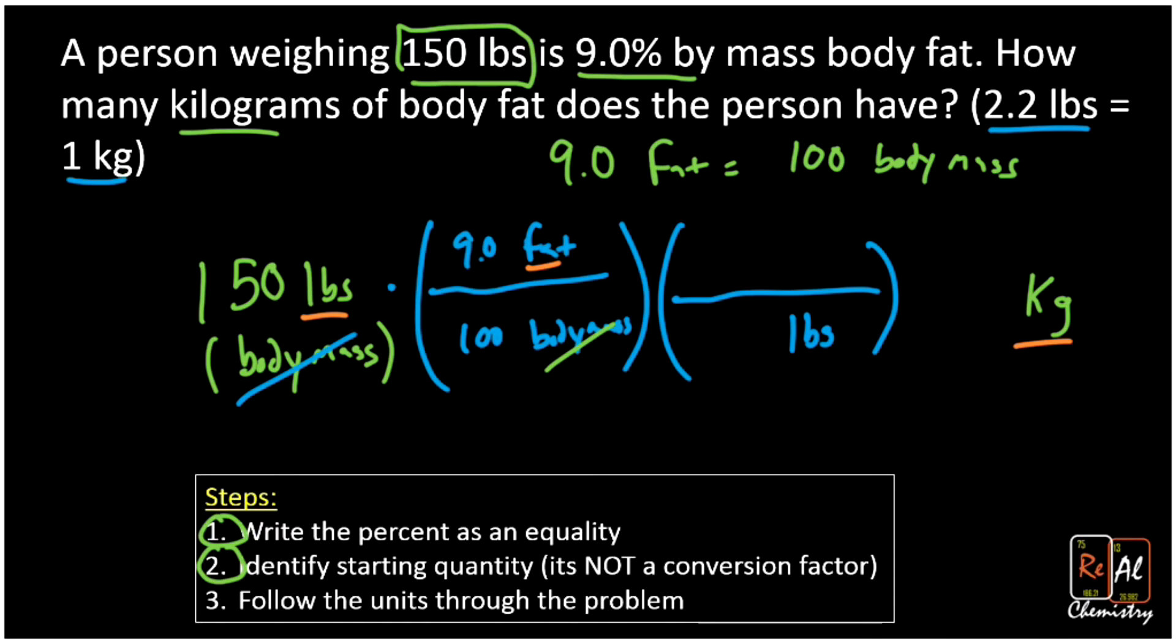The kilograms is going to go with 1 and the pounds with 2.2. Now all I'm going to do is 150 times 9 divided by 100 and then divided by 2.2. We can see that person would have 6.136 kilograms of body fat.